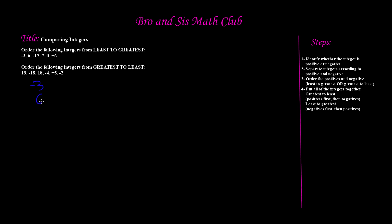Next number we have is 6. Remember this rule: if an integer does not have a sign in front of it, it is always a positive number. Next number is negative 15. Then we have 7, which is positive because it does not have a sign in front of it. Next we have 0. Remember: in our previous video we said that 0 is not a positive nor is it a negative. It is still an integer but it is the center — kind of like our boundary.